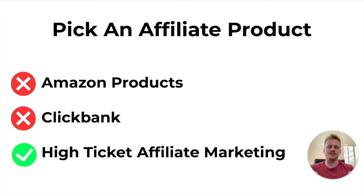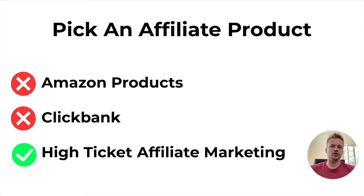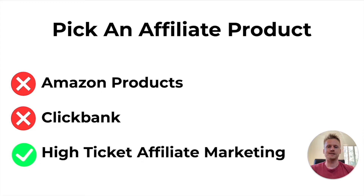Which brings me to option number three: high-ticket affiliate marketing products. The reason I recommend that you promote high-ticket affiliate marketing products is because when you sell one, your commission is going to be anywhere between $1,000 and $2,000 every single time you make a sale. So it's way easier to scale to $100 a day with high-ticket products instead of going with ClickBank or Amazon products.